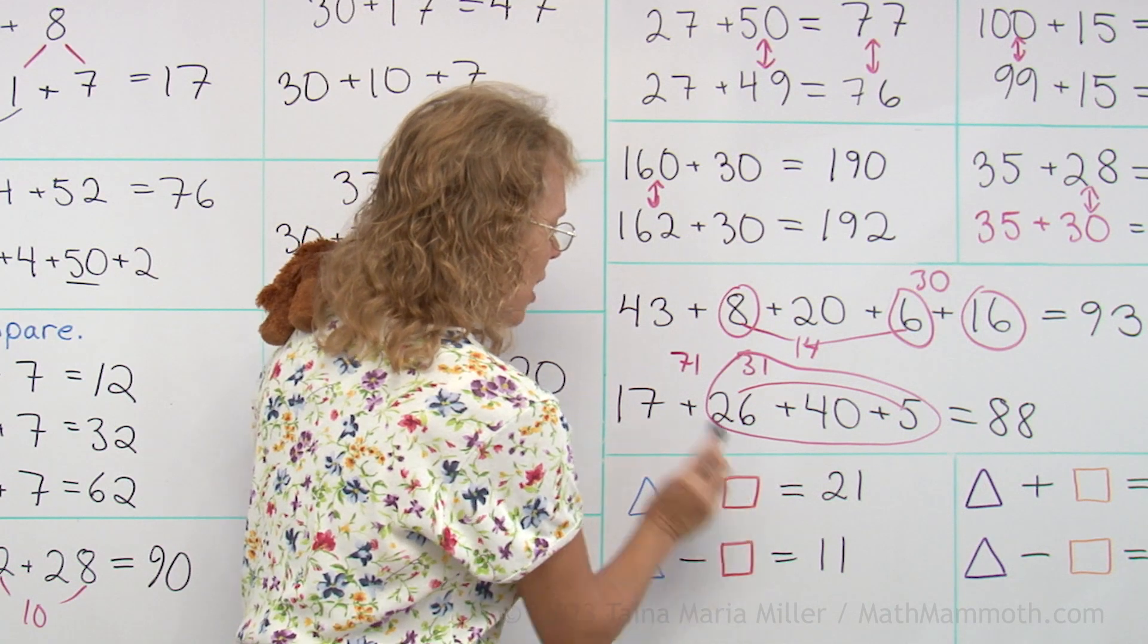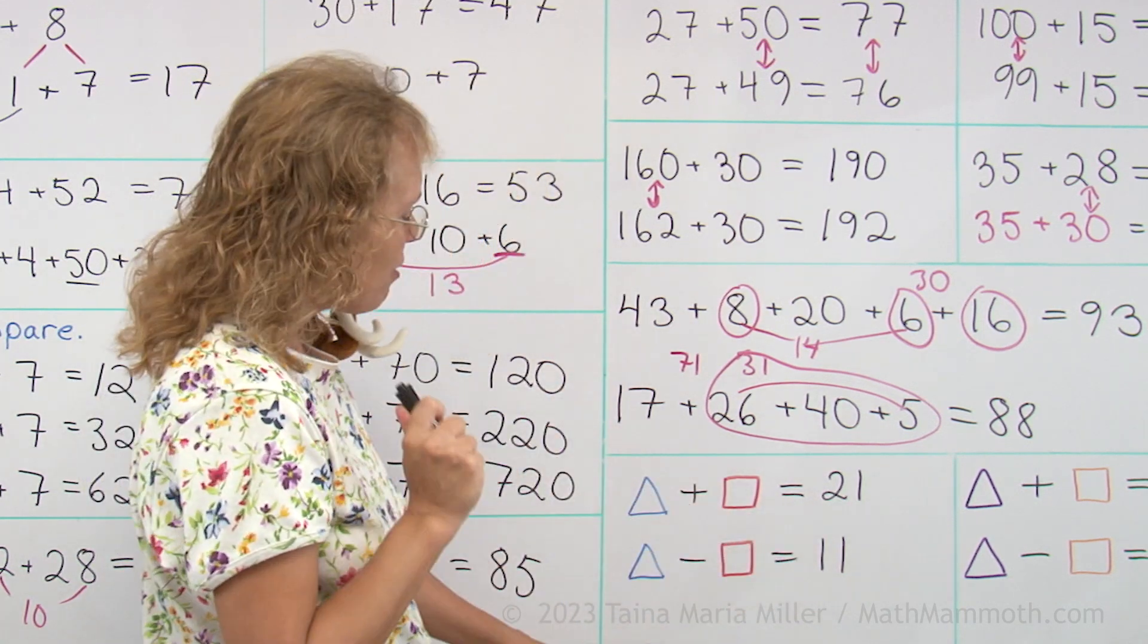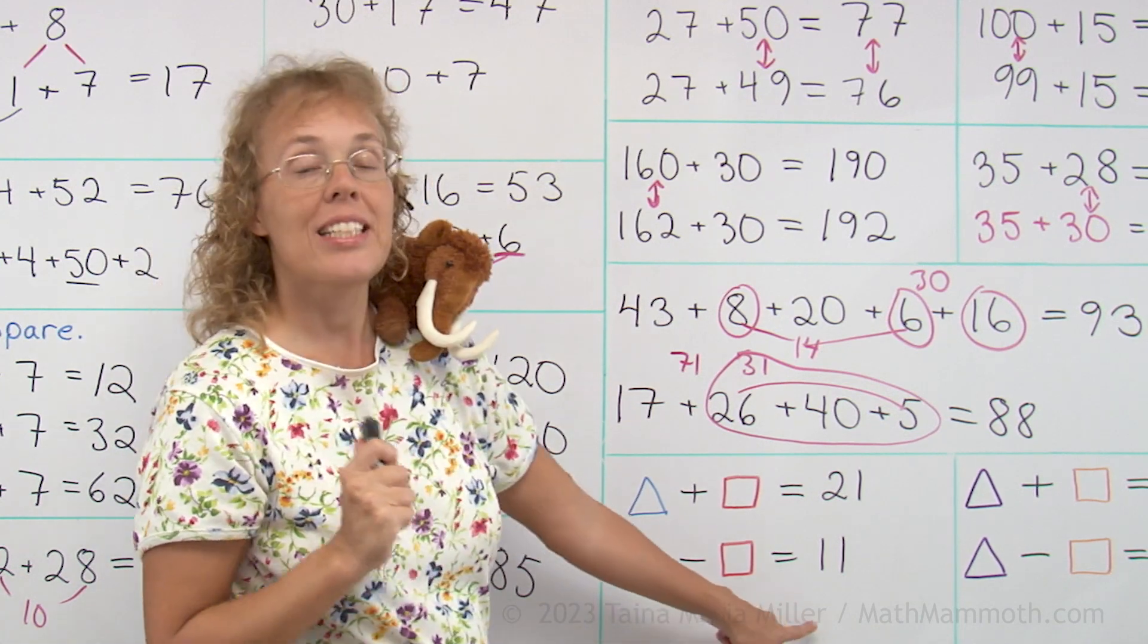And we know that if you add those two mystery numbers, you get 21. But if you subtract them, you get 11.